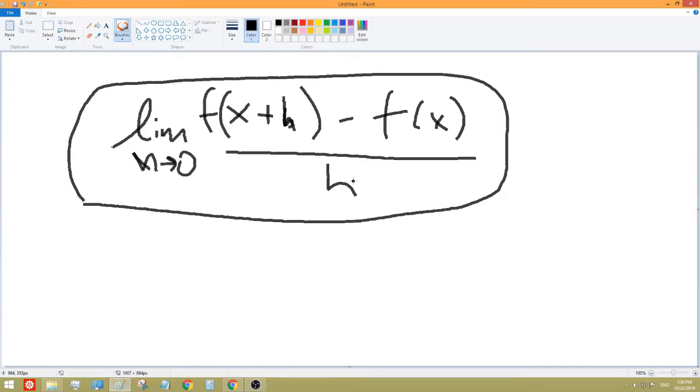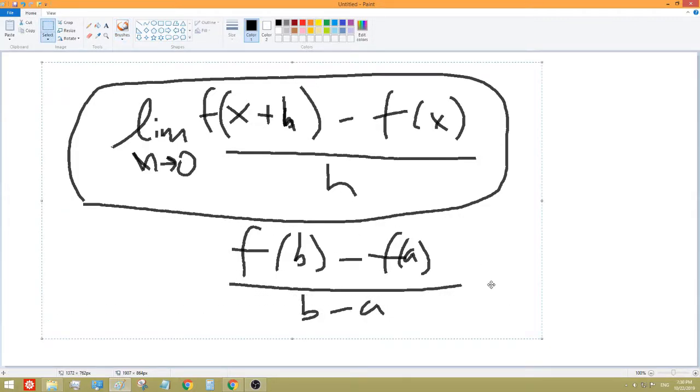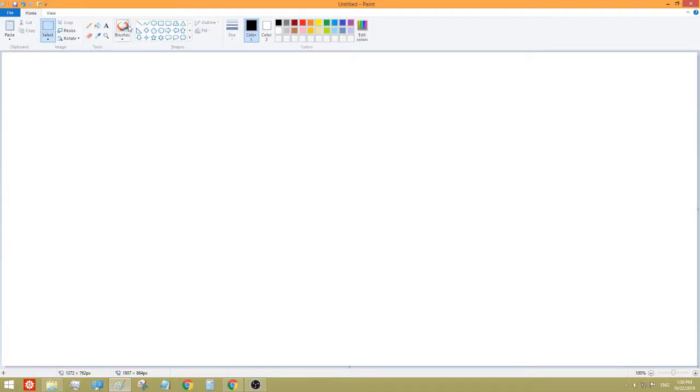So, basically, this just comes from that same idea of F of B minus F of A over B minus A. It's kind of just the same thing, except we're substituting in this H here. But, anyway, using this definition, we'll be able to do the limit of some quadratic functions.